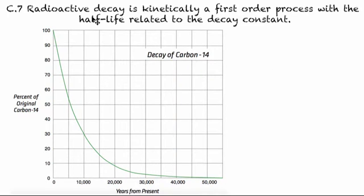In C.7, we're going to look at how radioactive decay is kinetically a first-order process with a half-life related to the decay constant. This is essentially connecting our rates unit in kinetics with radioactive decay and seeing that we can apply the same type of concept to others. So let's take a look at what we have here.